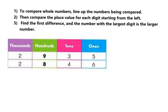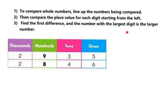When comparing whole numbers, there are three steps to follow. First, line up the numbers being compared place value by place value, just like when adding or subtracting. Then compare each place value starting from the left and working to the right. The first two digits you find that are different — the larger digit indicates the larger number overall.